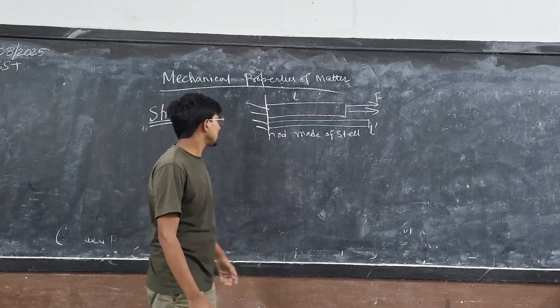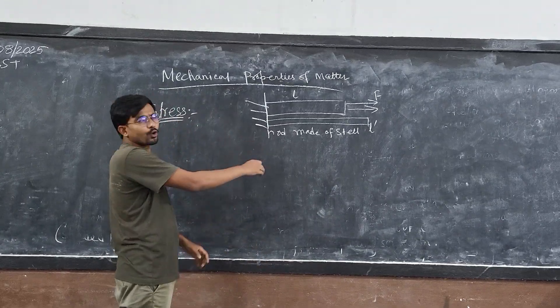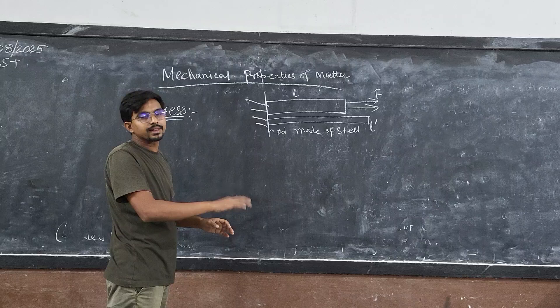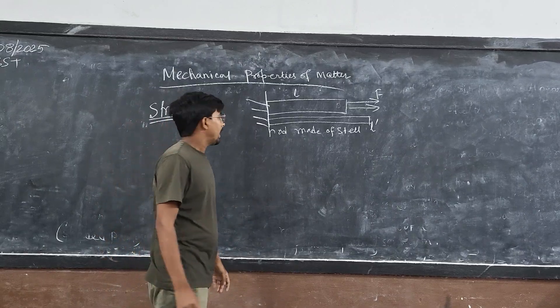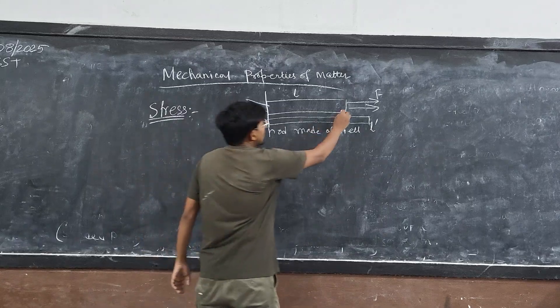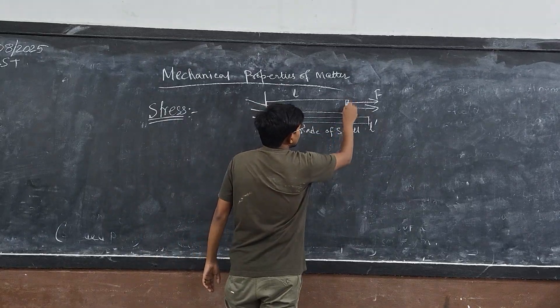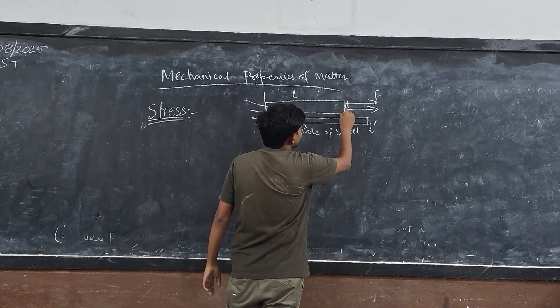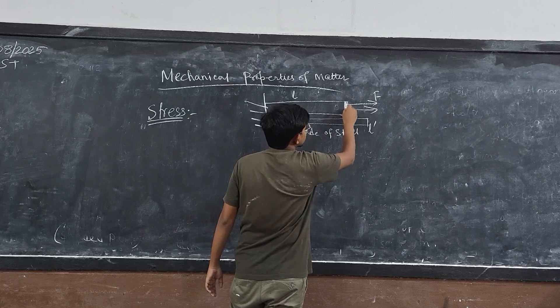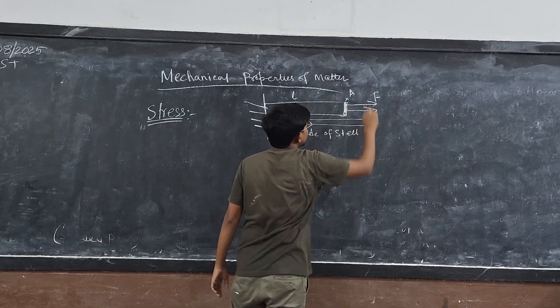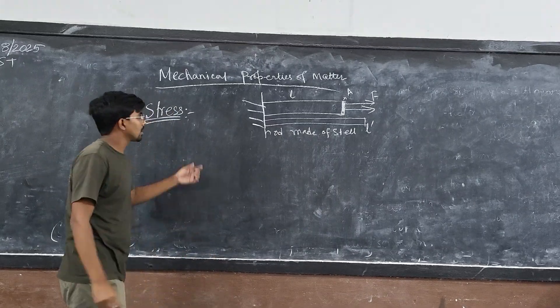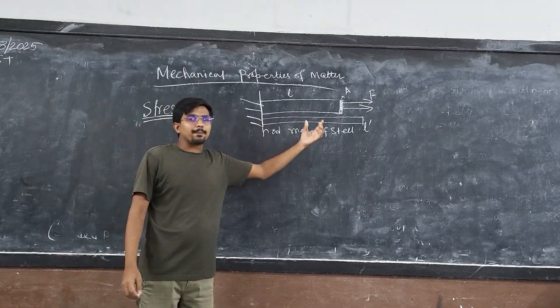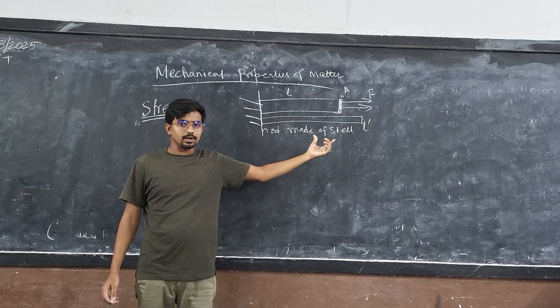So, here, the deforming force is equal to applied force and that is equal to the restoring force. Another thing, this force acts between this cross section only. Between this cross section only. That is the area of cross section. So, here, pressure is the applied force upon area.